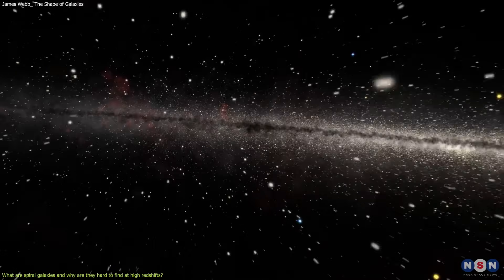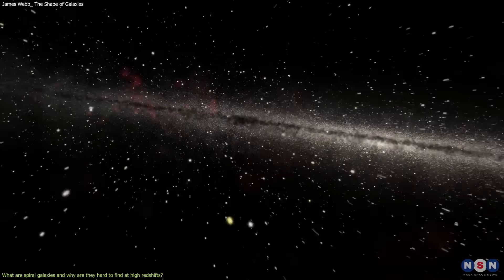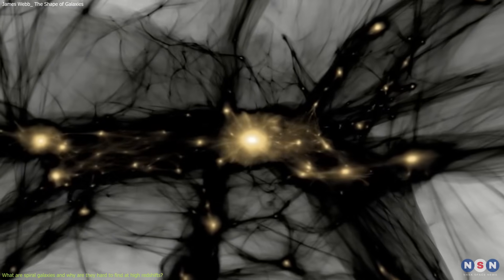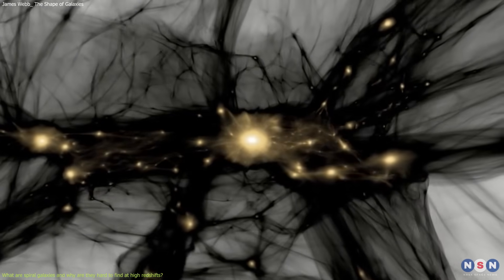While the arms and the disc contain younger stars, gas, and dust. They also have a halo of dark matter that surrounds them and holds them together.